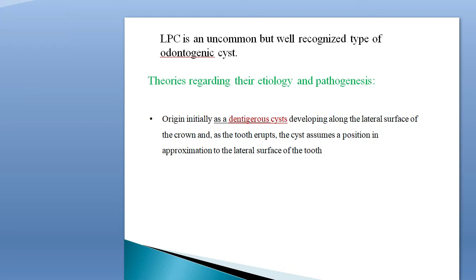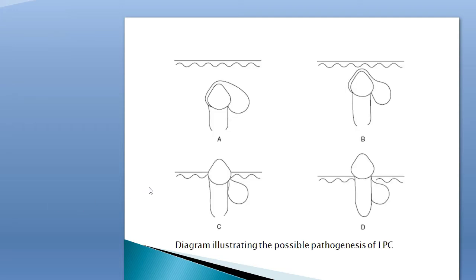The name suggests that it typically occurs lateral to the root surface of a vital tooth, and it is found in 0.7% of all jaw cysts. There are many theories regarding their pathogenesis. One theory says the origin is initially as a dentigerous cyst developing along the lateral surface of the crown, and as the tooth erupts, the cyst assumes a position in approximation to the lateral surface of the tooth. In this diagram, we can see expansion of the follicle on the lateral surface of the crown of the unerupted tooth, and at this stage the radiograph would show a lateral dentigerous cyst.